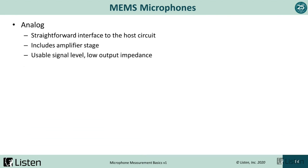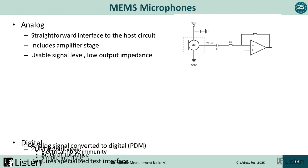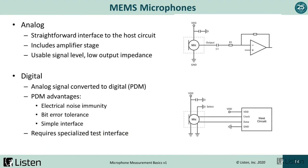There are two classes of MEMS mics. The analog MEMS has a very straightforward interface to the host circuit, with an amplifier stage built into the MEMS package, giving it an inherently usable signal level and very low output impedance. The digital MEMS has a converter that takes the analog signal and converts it to a digital PDM stream. The advantages of PDM are low electrical noise immunity, bit error tolerance, and a very simple interface to the host. However, digital MEMS microphones require a very specialized test interface.